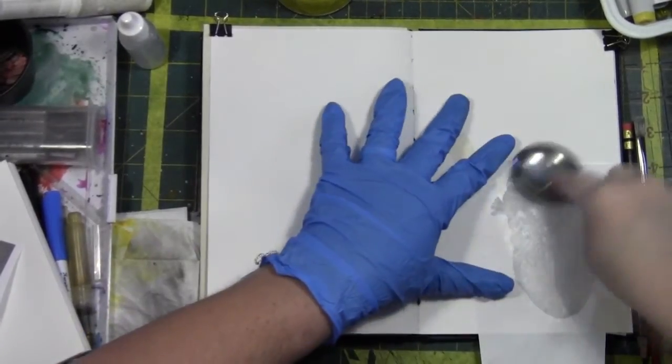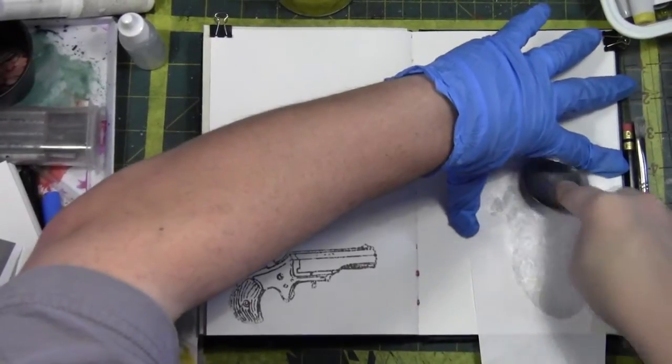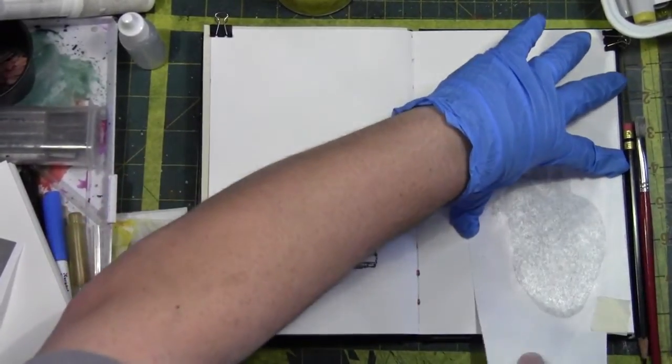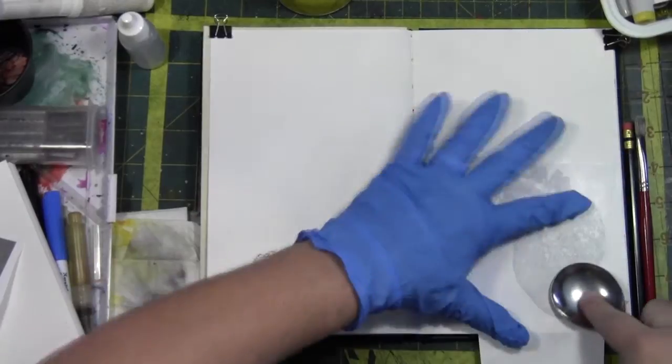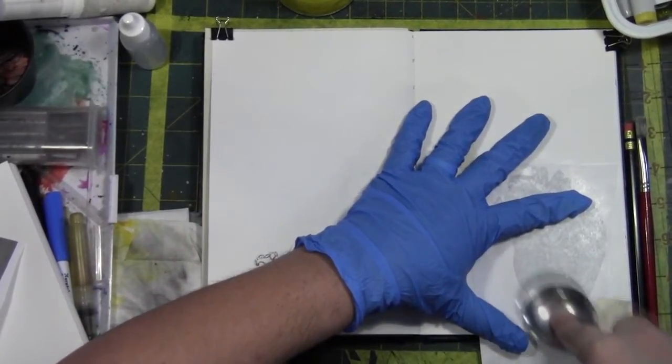Again, burnishing it down. This time I get a good print and I'm using a lot of pressure. There we go. You want to peel back and check it and see if you're getting a good transfer.